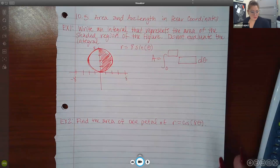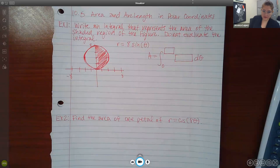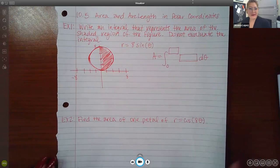Okay, in this video, we're going to cover 10.5, which is the area and arc length in polar coordinates. Sorry, I was running halfway down the hallways.